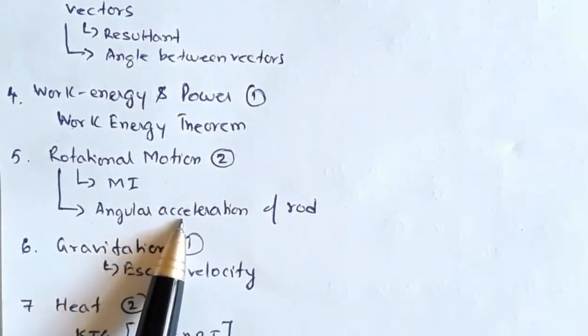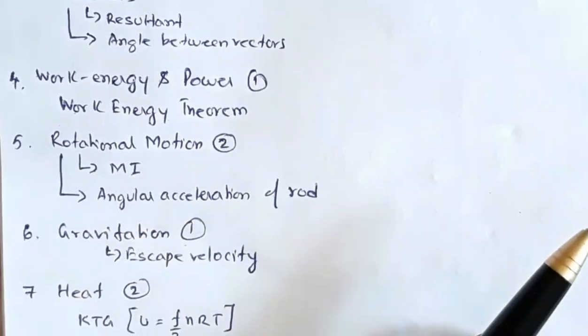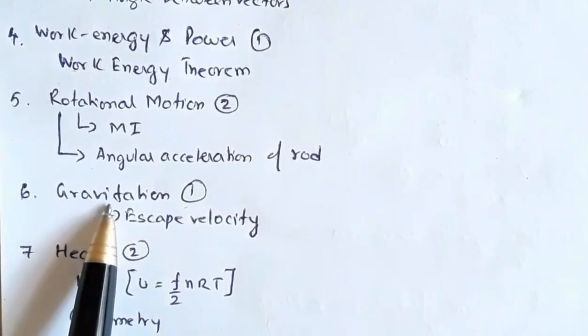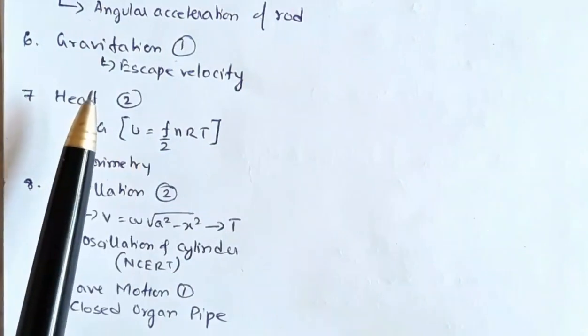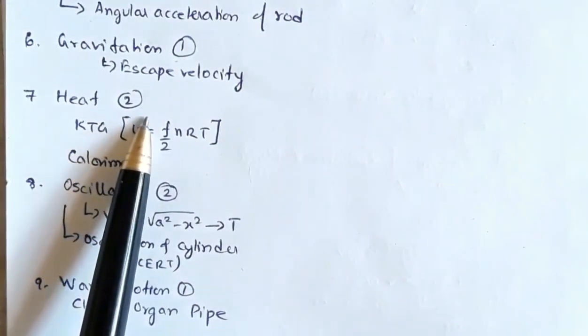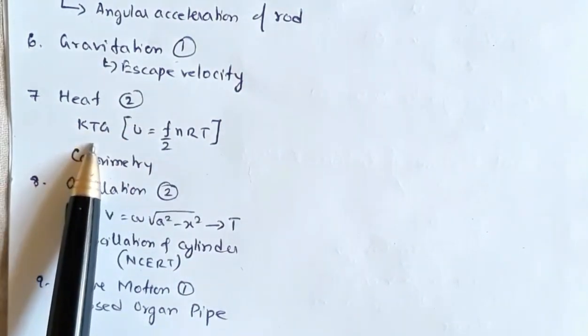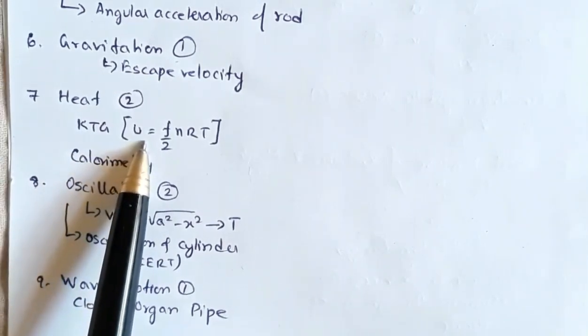From gravitation there was one question involving the topic escape velocity. From heat and thermodynamics there were two questions: one from kinetic theory of gases involving the calculation of internal energy from the formula U = f/2 nRT.